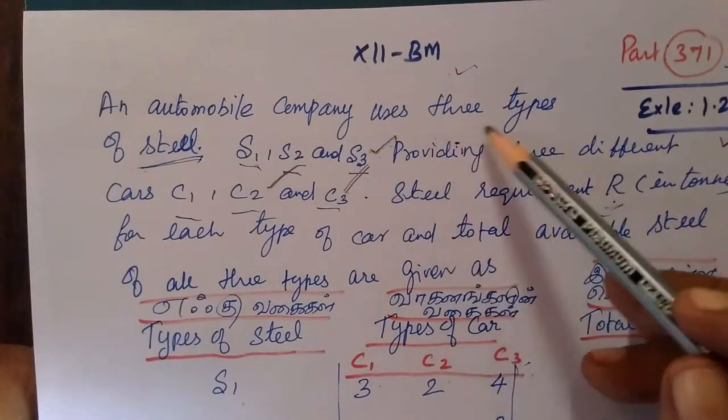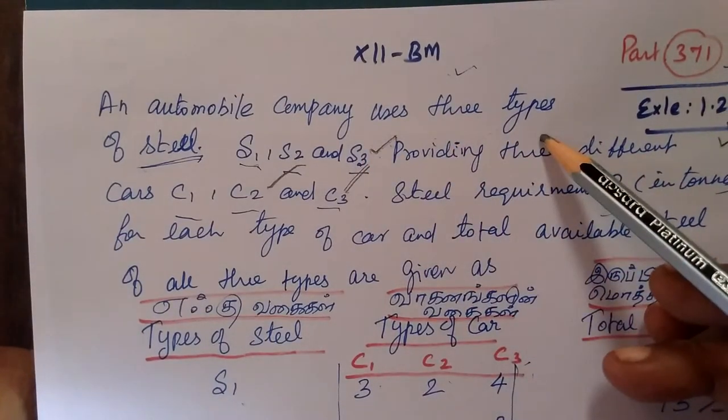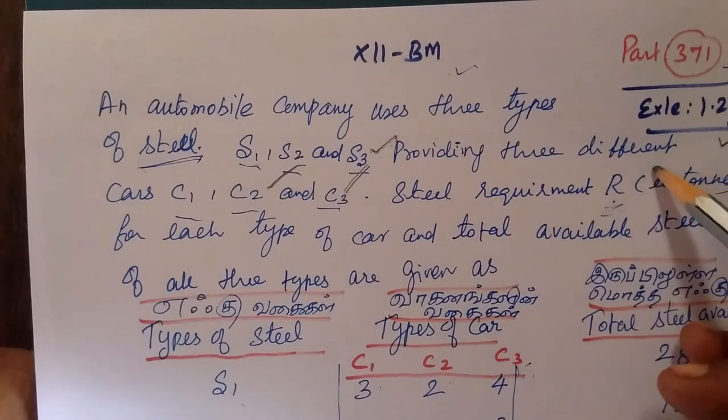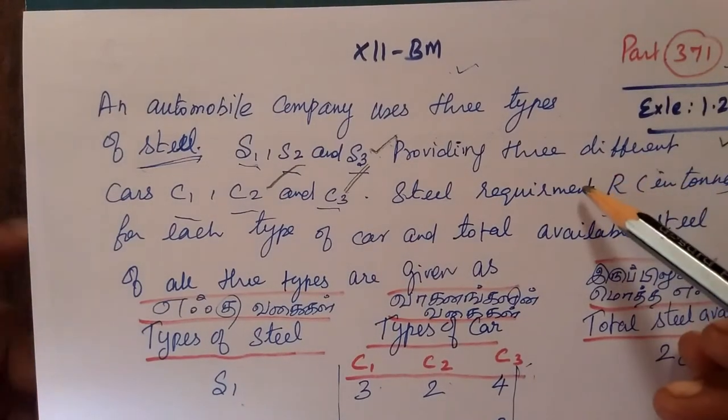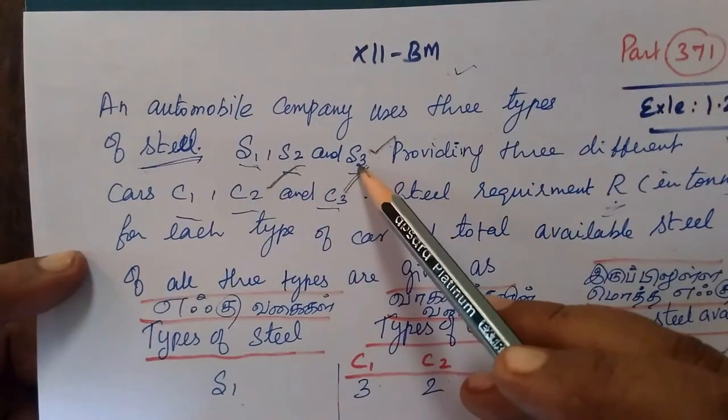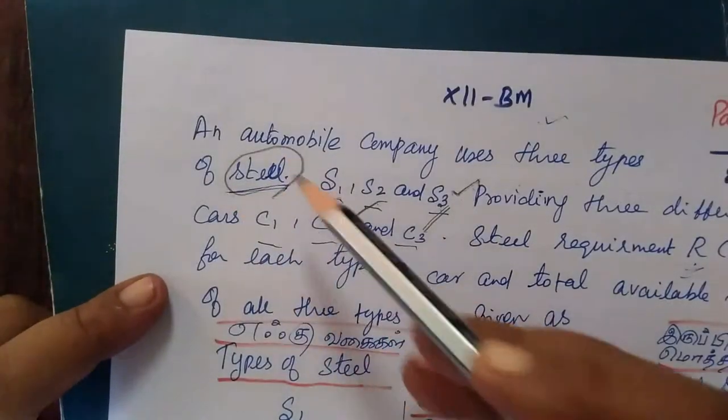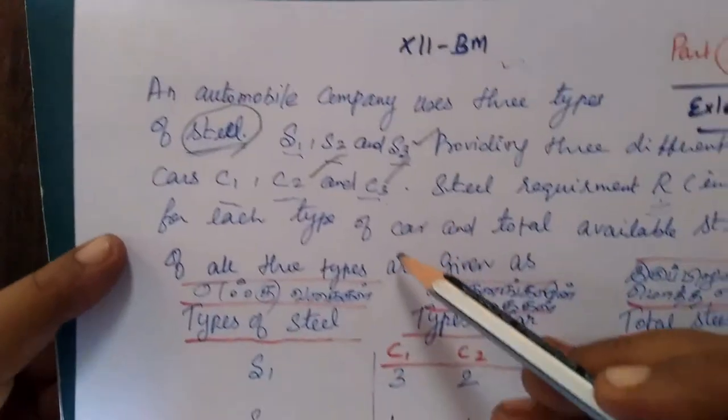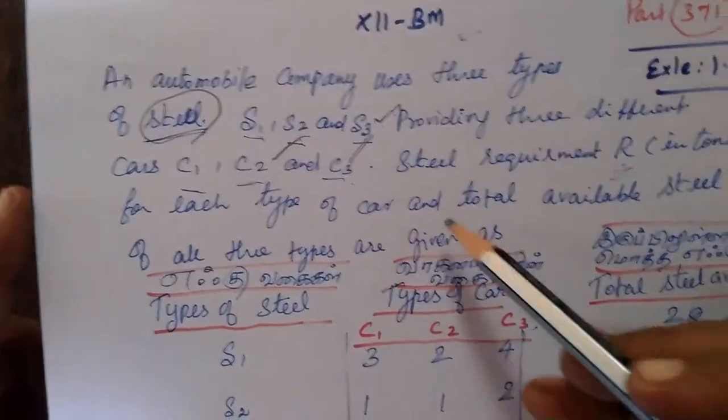An automobile company uses 3 types of steel, S1, S2 and S3, for producing 3 different cars, C1, C2 and C3. S1, S2, S3 are the types of steel. C1, C2, C3 are the types of car.